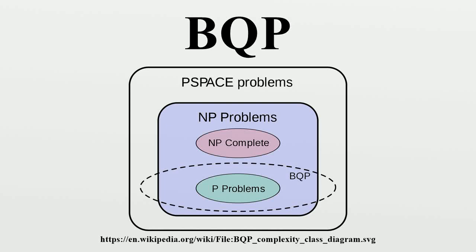In Computational Complexity Theory, BQP is the class of decision problems solvable by a quantum computer in polynomial time, with an error probability of at most one third for all instances. It is the quantum analog of the complexity class BPP.